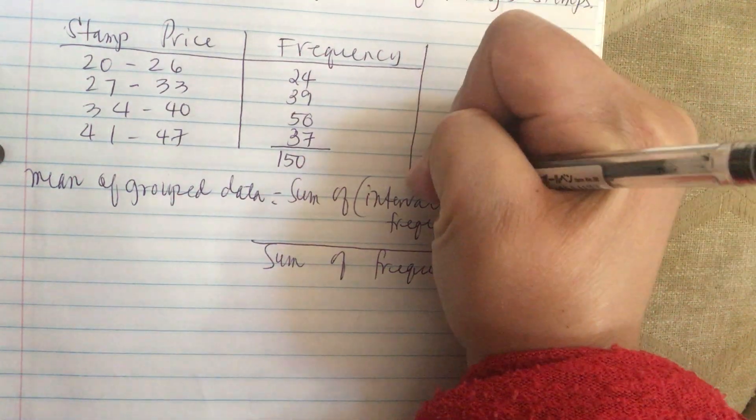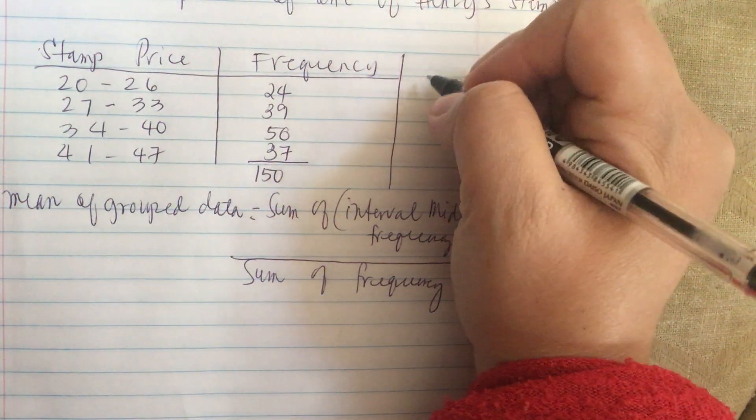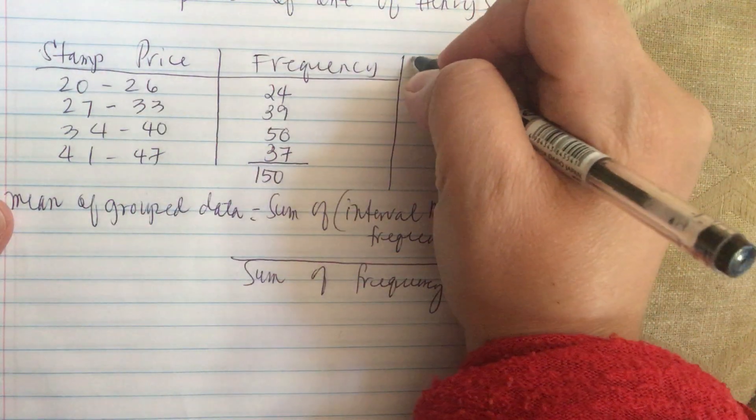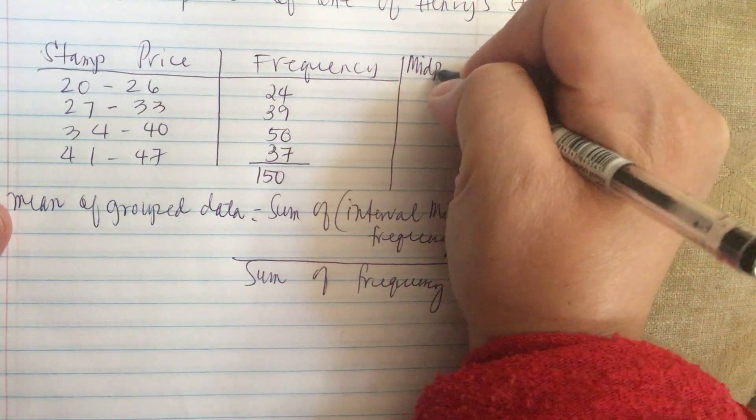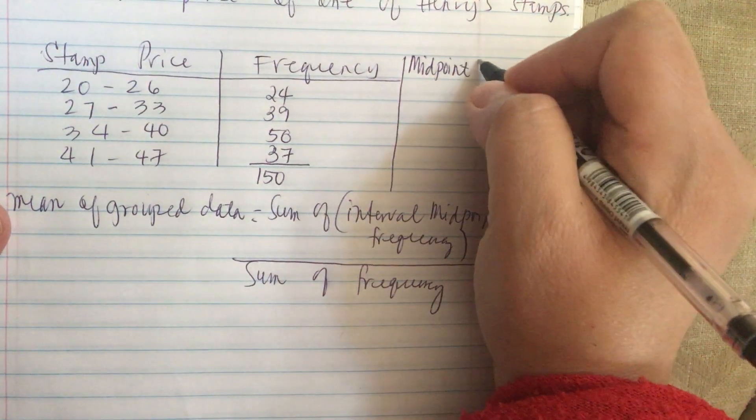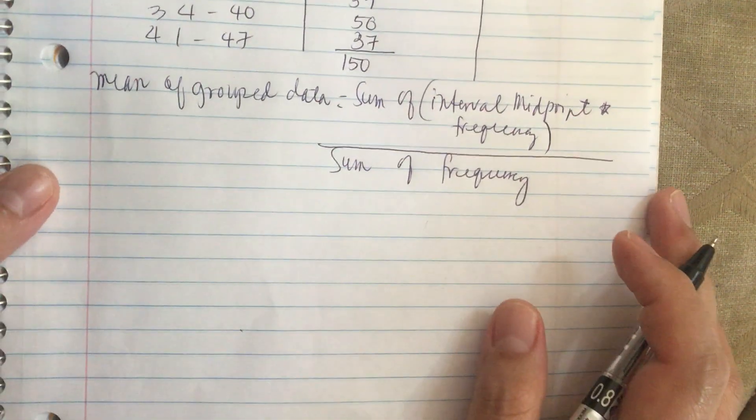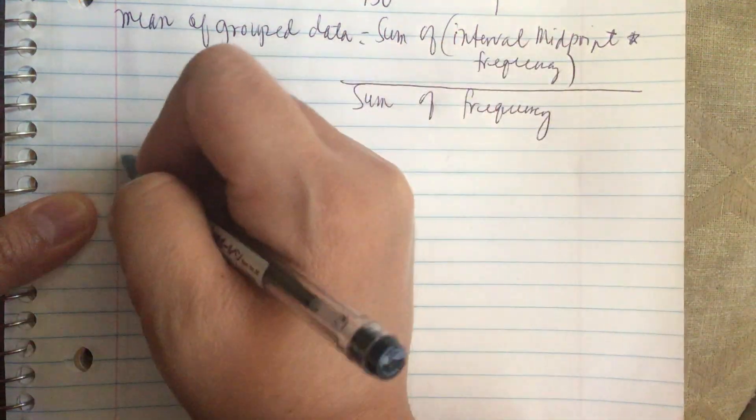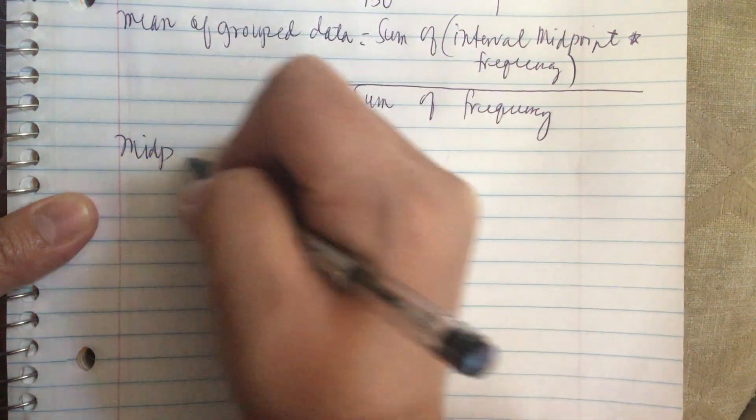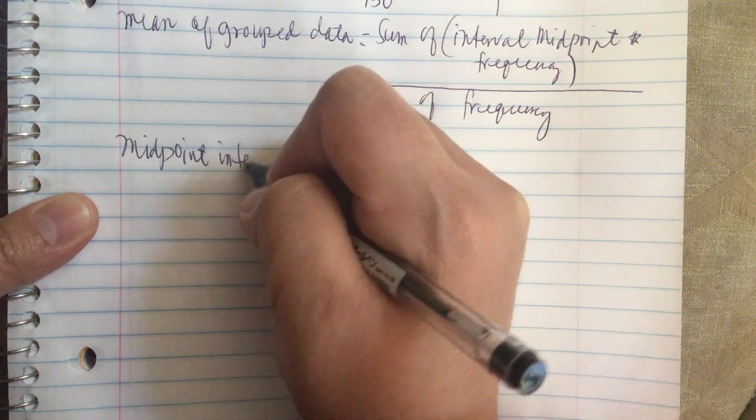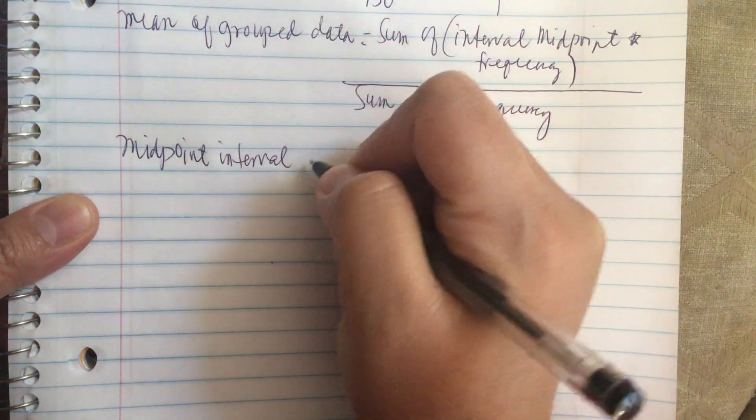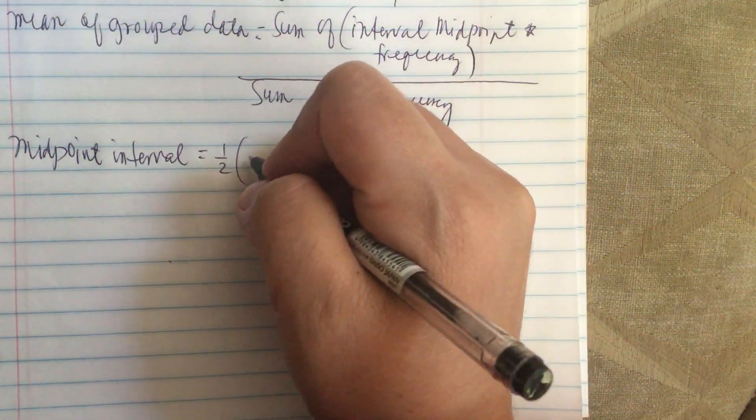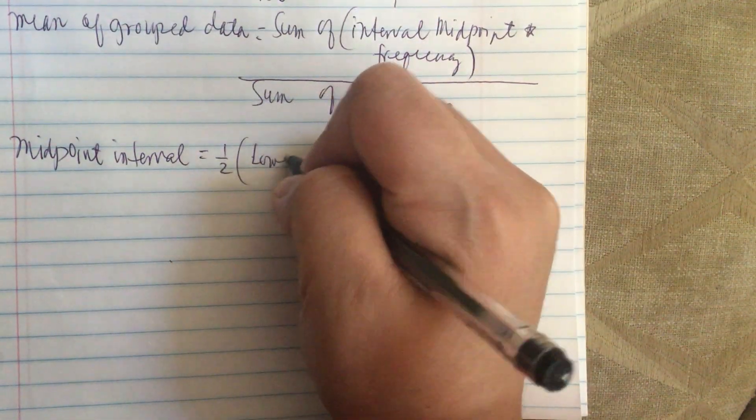We need another column here for the midpoint. We need a class midpoint. To find the midpoint interval, the midpoint interval is equal to one half times the lower class limit plus the upper class limit.